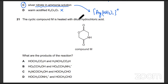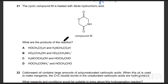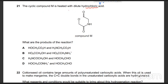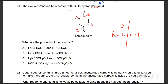The cyclic compound M is heated with dilute hydrochloric acid — what are the products? There's an ester group; the ester group breaks down. The ester link will break. This turns into a carboxylic acid and this turns into an alcohol. The ester will break and it will turn into an alcohol and a carboxylic acid.